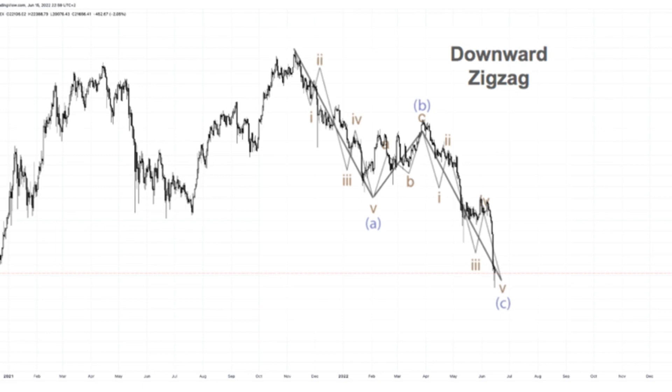Motive waves are primary cycles consisting of five total sub-waves. Waves 1, 3, and 5 are impulse waves in the primary market trend direction.